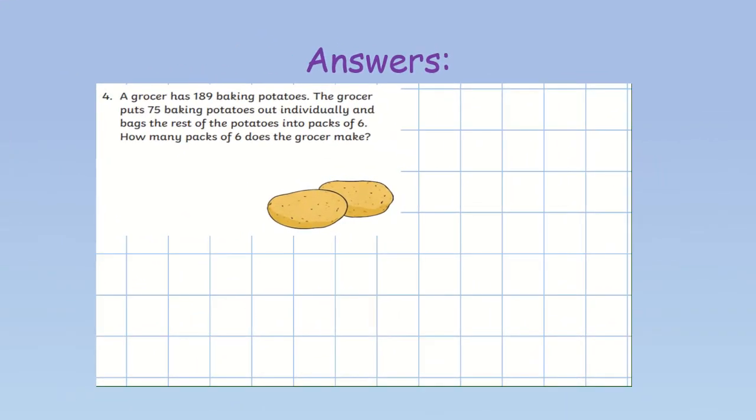Question 4. So, we start with 189 baking potatoes. However, 75 of them are put out individually. So, we can subtract that 75. 189 subtract 75. 9 take away 5 leaves us with 4. 8 take away 7 leaves you with 1. And we keep our 100. So, now we have 114 potatoes.